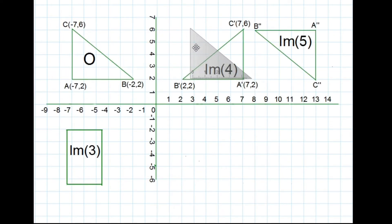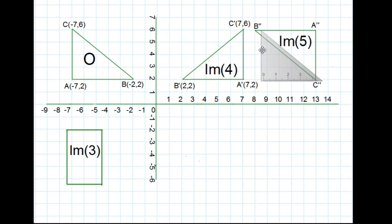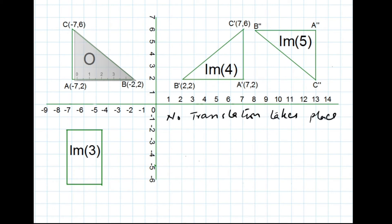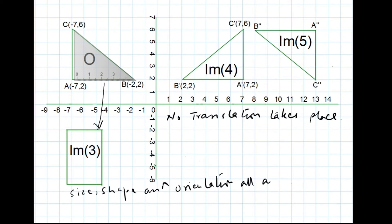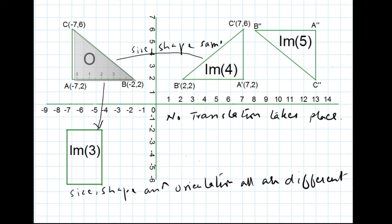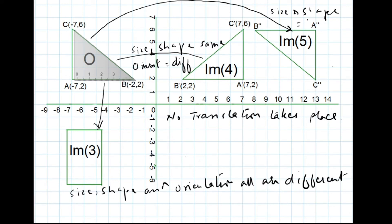Another animation is presented to explain translation. The object is moved towards image 4 — it cannot fit — and the same applies to image 5. So no translation takes place between the object and image 3, image 4, or image 5. Comparing object O and image 3, size, shape, and orientation are all different. Comparing object O and image 4, size and shape are the same but orientation is different, which is why it does not fit into image 4. Similarly, comparing object O and image 5, size and shape are the same but orientation is different.